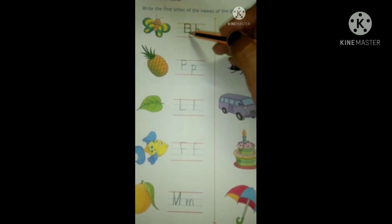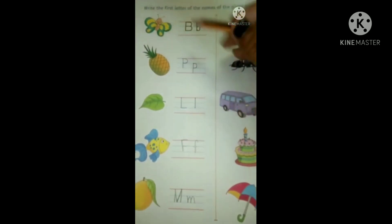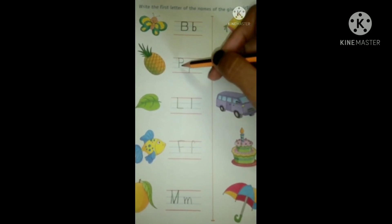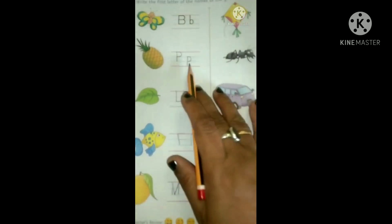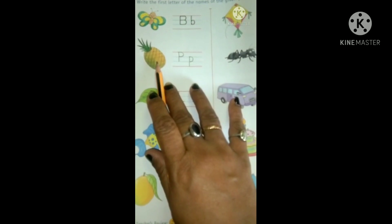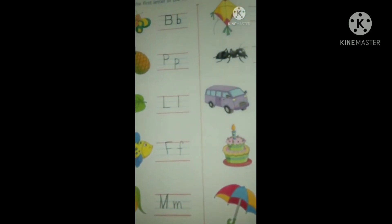See B for butterfly. Now we have to write capital and small both the letters. So please write down P for pineapple but speak loudly too.